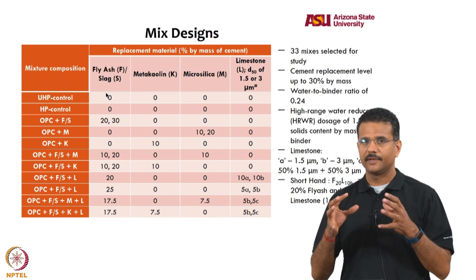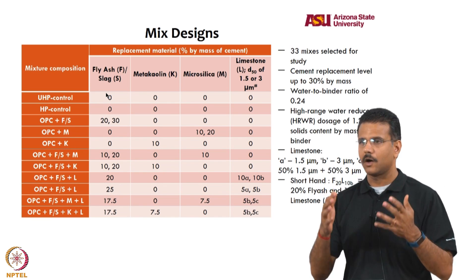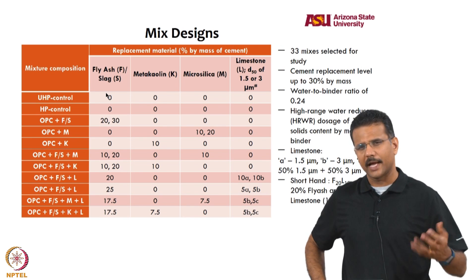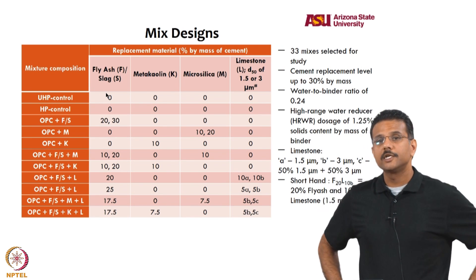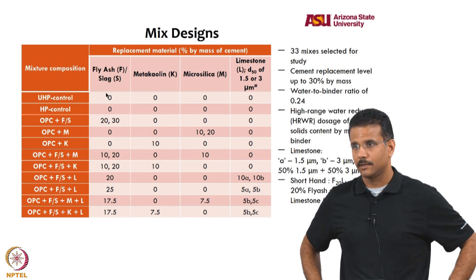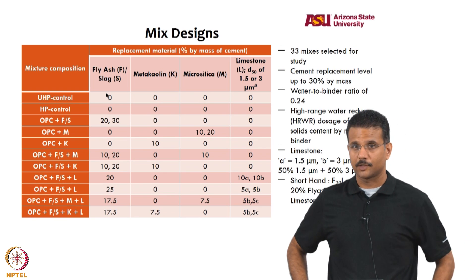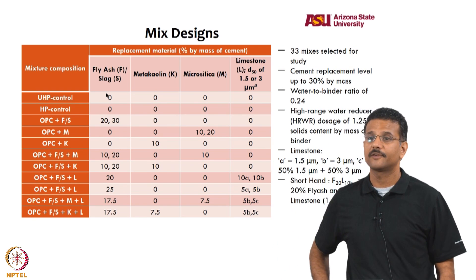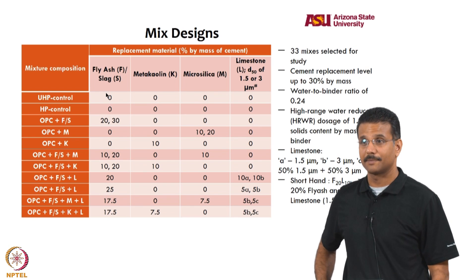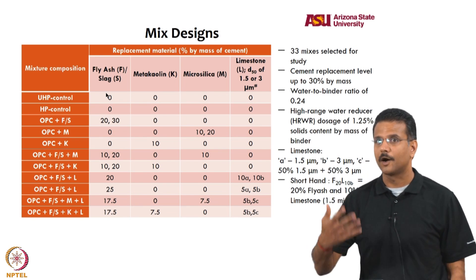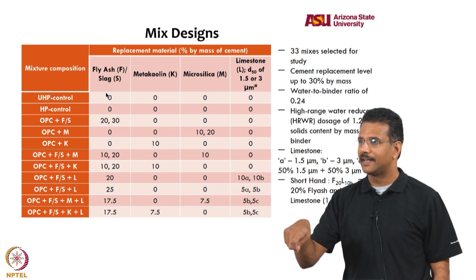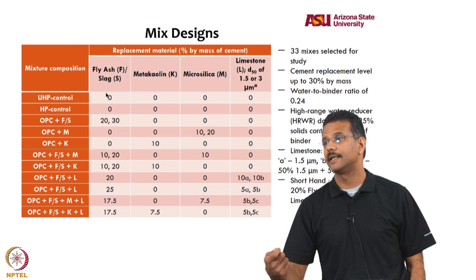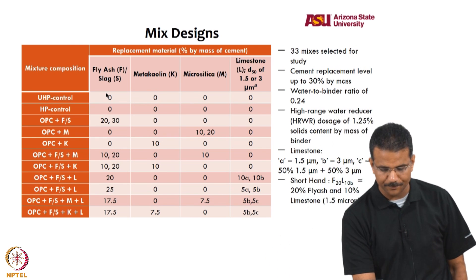With these available materials, a large number of paste mix systems were designed — 33 in total in this study — at a very low water-binder ratio of 0.24 going down further, with 1.25% high range water-reducing admixture (polycarboxylate-based superplasticizer) by mass of binder, which translates to about 5% by mass of cement. If you mix 5% superplasticizer with all available water at once, you will get one large clump — special mixing methods are required.